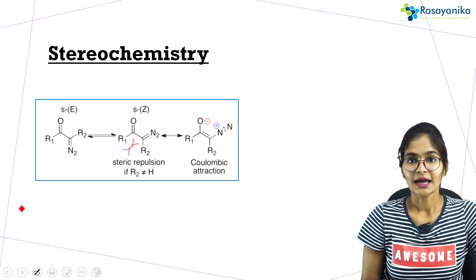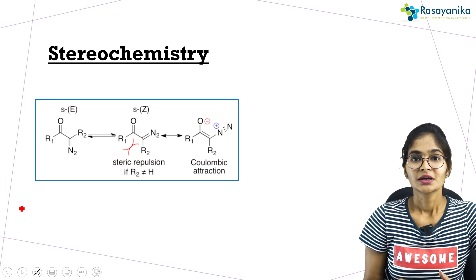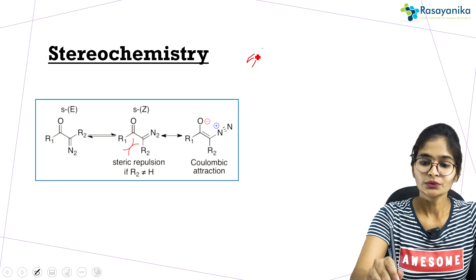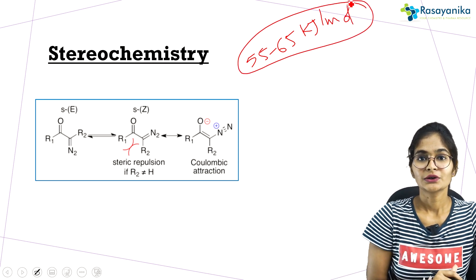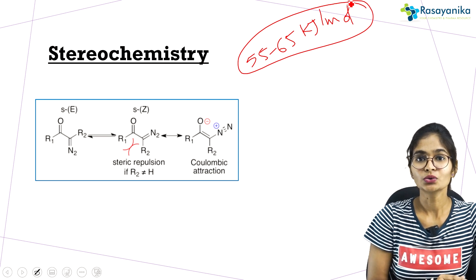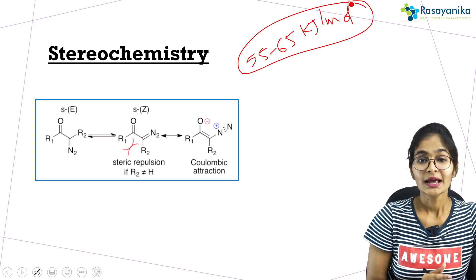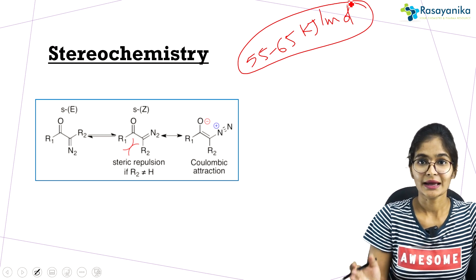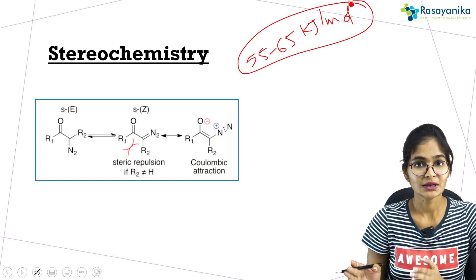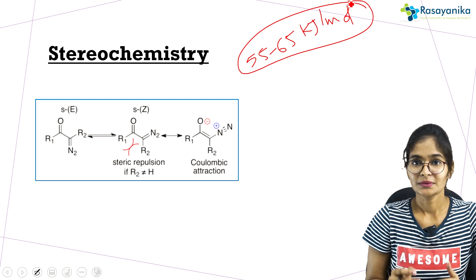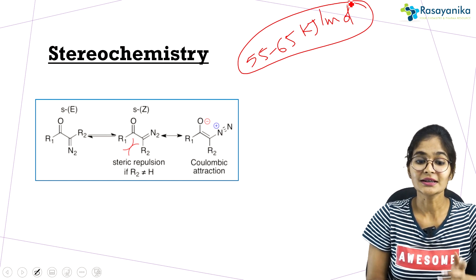Regarding the stereochemistry, the normal alpha diazocarbonyl compounds are planar structures. These planar structures have an energy barrier of about 55 to 65 kilojoules per mole. Because of this, at equilibrium the compound will exist in either its cis or trans conformation. When undergoing the concerted mechanism it will be in the cis conformation, and when undergoing the stepwise mechanism it will be in the trans conformation. The key question is why we prefer the S-cis conformation over the trans conformation.